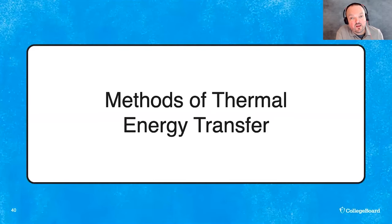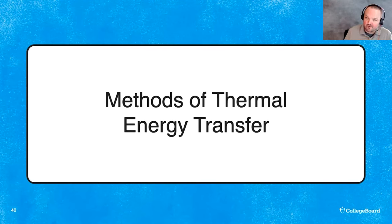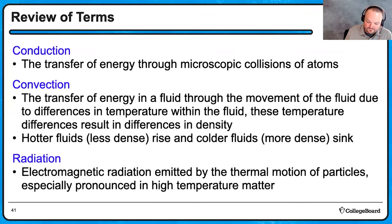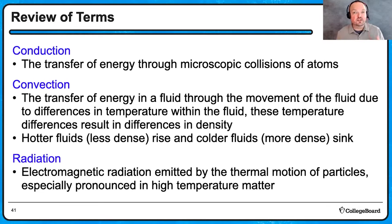Next we need to review the different ways to transfer thermal energy. There are three methods. Conduction is the transfer of energy through microscopic collisions when things are touching one another. Convection is the transfer of thermal energy in a fluid, involving buoyancy and density differences resulting in warmer fluids mixing with cooler fluids. Radiation is electromagnetic radiation — a good example is the sun making things warm.